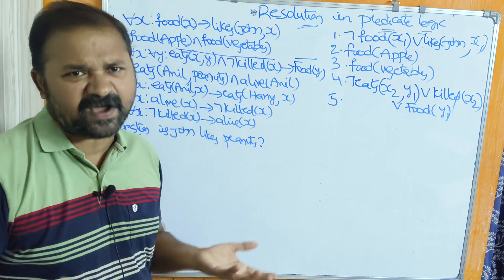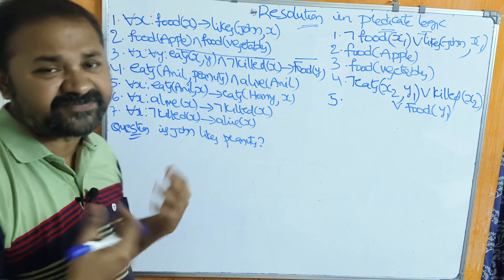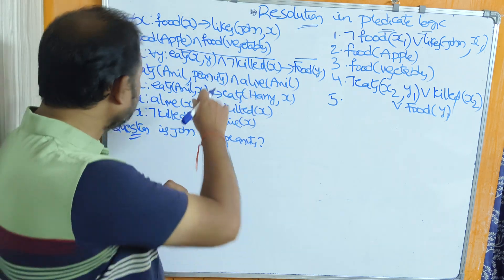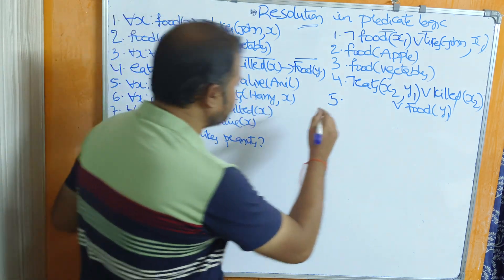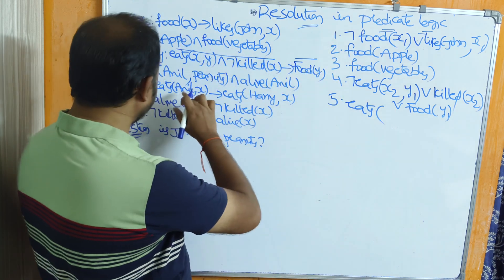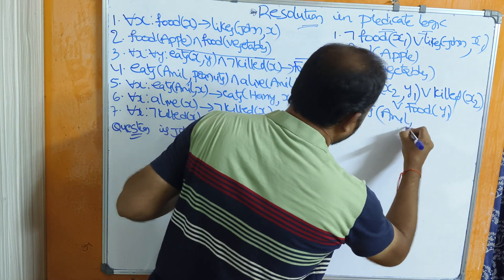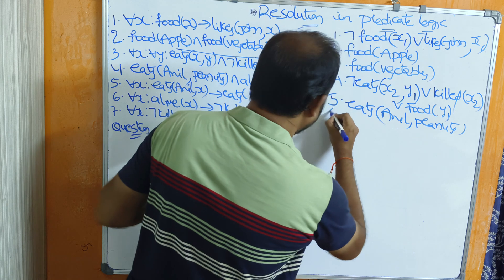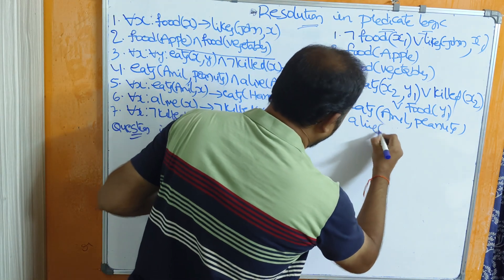Next statement: eats(anil, peanuts) AND alive(anil). This is already in clause form. Because we have an AND operator, we divide this into two separate statements: the first is eats(anil, peanuts) and the second is alive(anil).